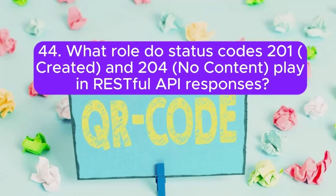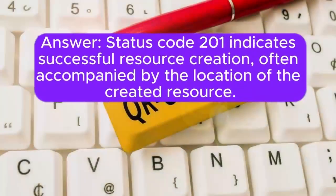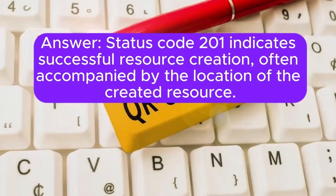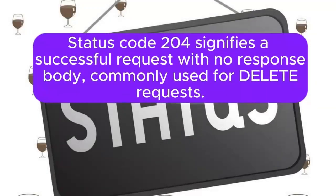Question 44: What role do status codes 201 Created and 204 No Content play in RESTful API responses? Status code 201 indicates successful resource creation, often accompanied by the location of the created resource. Status code 204 signifies a successful request with no response body, commonly used for DELETE requests.